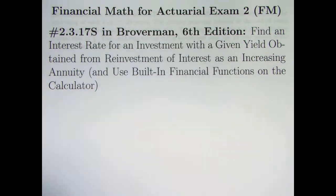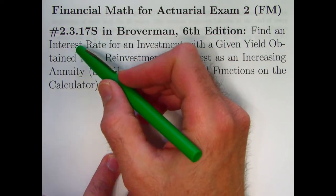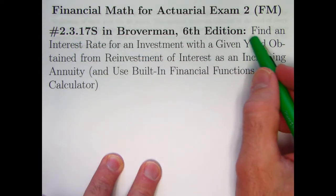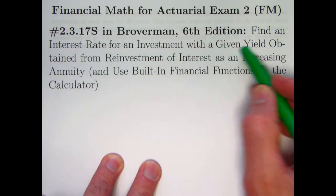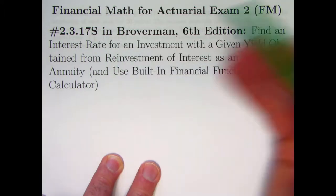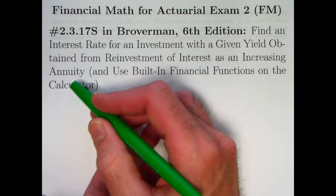Hi. In this 56th video on financial math for actuarial exam 2, we're going to be looking at problem 2.3.17s.